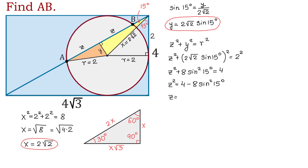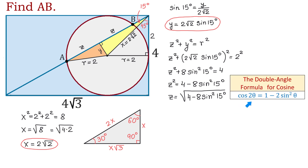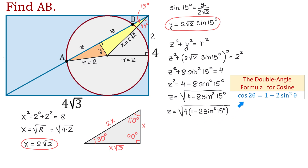Z equals square root of 4 minus 8 sine squared of 15 degrees. Here we can use a calculator or we can simplify without a calculator. For this, we will need the double angle formula for cosine. The formula is cosine of 2 theta equals 1 minus 2 sine squared of theta. To apply this formula inside the square root, first we will factor out 4. So we will have Z equals square root of 4 times 1 minus 2 sine squared of 15 degrees. Then square root of 4 will be 2, and on this part we will apply the double angle formula, replacing 1 minus 2 sine squared of 15 degrees with cosine of 30 degrees.